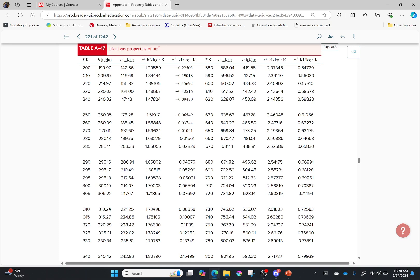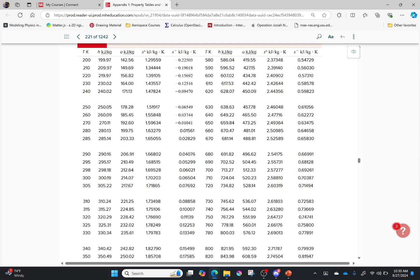All it is is that for air it gives you the temperature, the enthalpy, internal energy, and entropy for each temperature. If you get something in between, you have to interpolate.